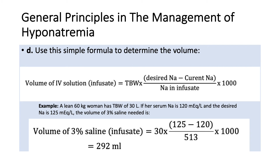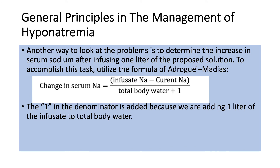If the patient is symptomatic — say altered mental status or possibly seizures — you can give the first 100 ml quickly, maybe over 10 minutes, and then the rest more slowly. Another way to look at the problem is to determine the increase in serum sodium after giving one liter of a proposed solution.